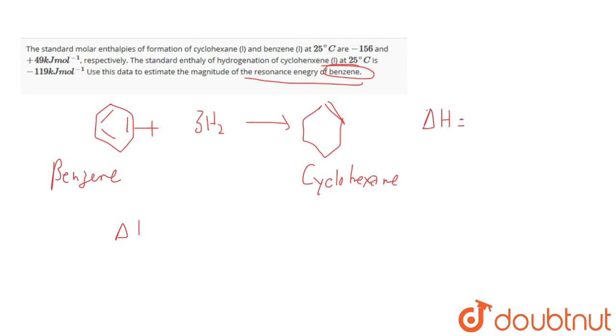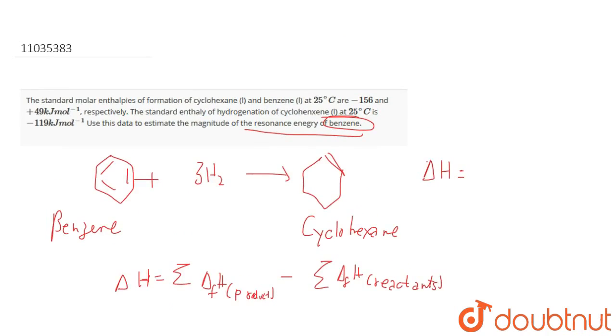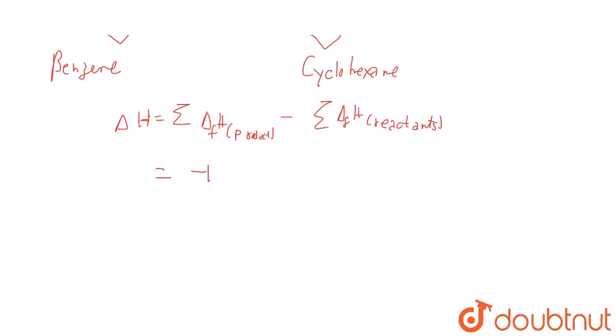So clearly, delta H equals summation of delta H of formation of products minus summation of reactants. Delta H of formation of the product side, that is cyclohexane, is given to be minus 156, and the reactant side is 49, in kilojoules per mole. So this comes out to be minus 205 kilojoules per mole.